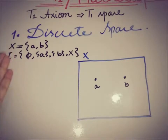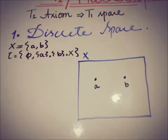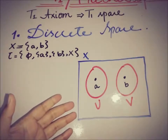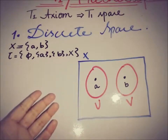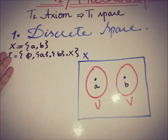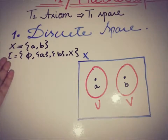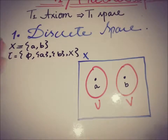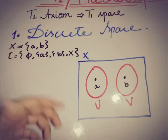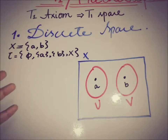We check that every discrete space is a T1 space by finding two open sets each containing one point but not the other. The open set {A} and the open set {B} satisfy this: A does not belong to {B} but belongs to {A}, and B does not belong to {A} but belongs to {B}. This satisfies the T1 condition, and as the topology expands with more elements, we can always find at least two such open sets, so the condition remains fulfilled.